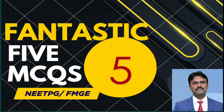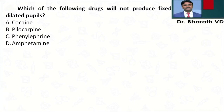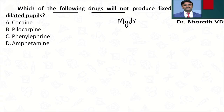Welcome to one more fantastic 5 MCQ discussion. Let's start with the first one: which of the following drugs will not produce a fixed dilated pupil? Dilating a pupil is called mydriasis. Cocaine can cause mydriasis, but pilocarpine will cause miosis, phenylephrine can cause mydriasis, and amphetamine can cause mydriasis. So the answer is B, pilocarpine.